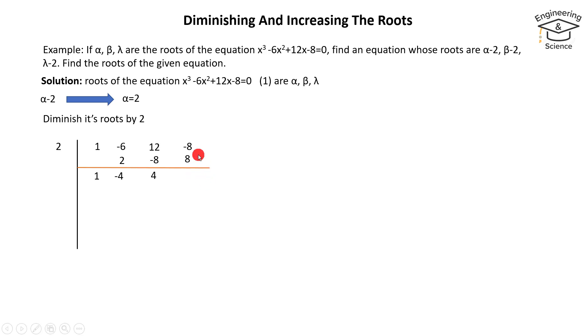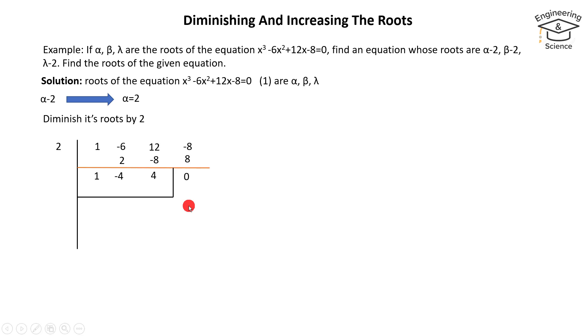The sum of minus 8 and 8 equals 0. We now remove the term in x. Let's remove the term x from the next step.